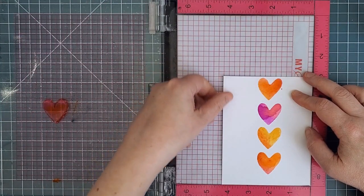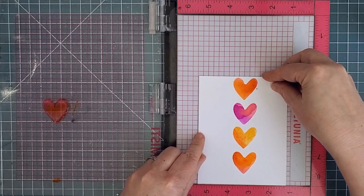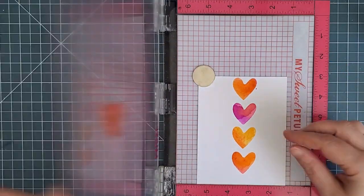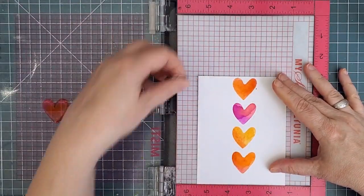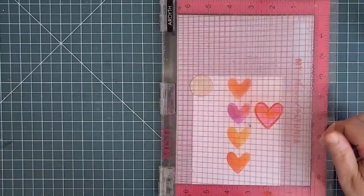When it's time to stamp another column of hearts, I use the same counting technique but this time I move the paper to the left. Again, I check the positioning and adjust as necessary before actually doing any stamping.